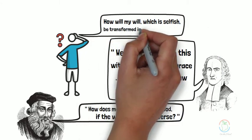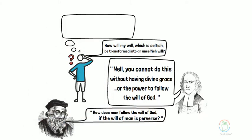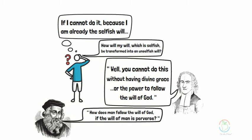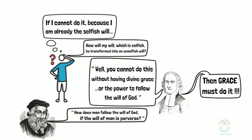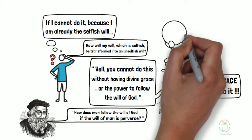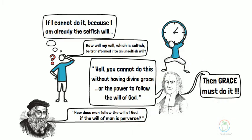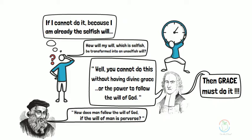How will my will, which is selfish, be transformed into an unselfish will? If I cannot do it because I am already the selfish will, then grace must do it. If grace has not already done it, why not? Because I didn't accept it. But by definition, I had no power to accept it because my will was selfish.